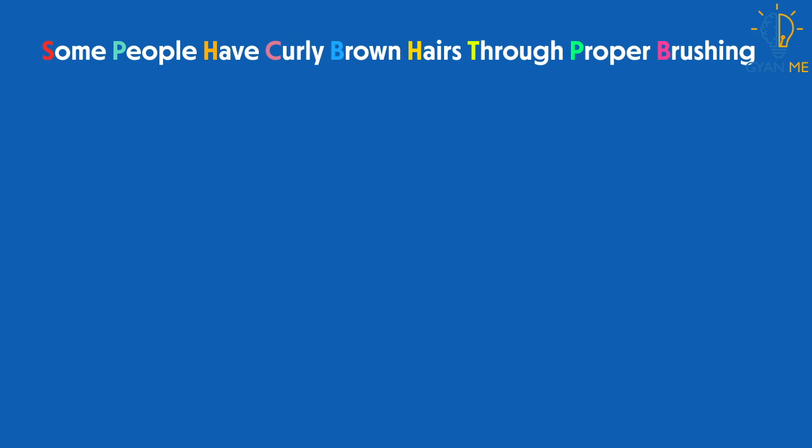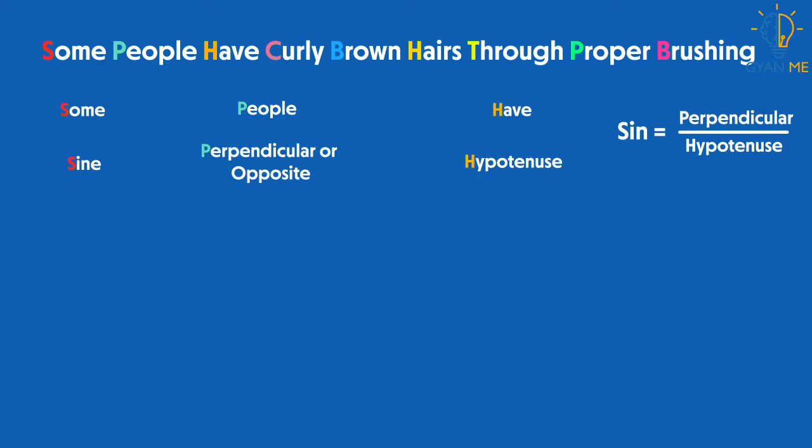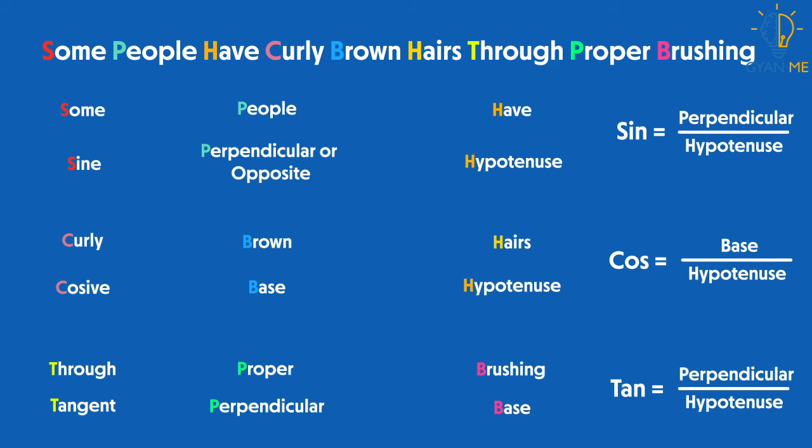There is one another way of remembering these three ratios. Let me give you one rhyme. Some people have curly, brown hairs through proper brushing. You can remember this rhyme with reference to perpendicular and base like this.